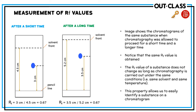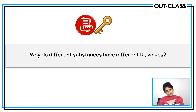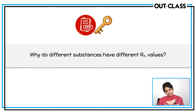Every substance has a fixed RF value in a fixed solvent. Just as you can identify a substance by its boiling point, you can identify a substance by its RF value. The RF value helps us identify what substance is present. Different substances have different RF values because they have different solubilities in the same solvent, causing them to rise to different heights and giving different ratios with the solvent.